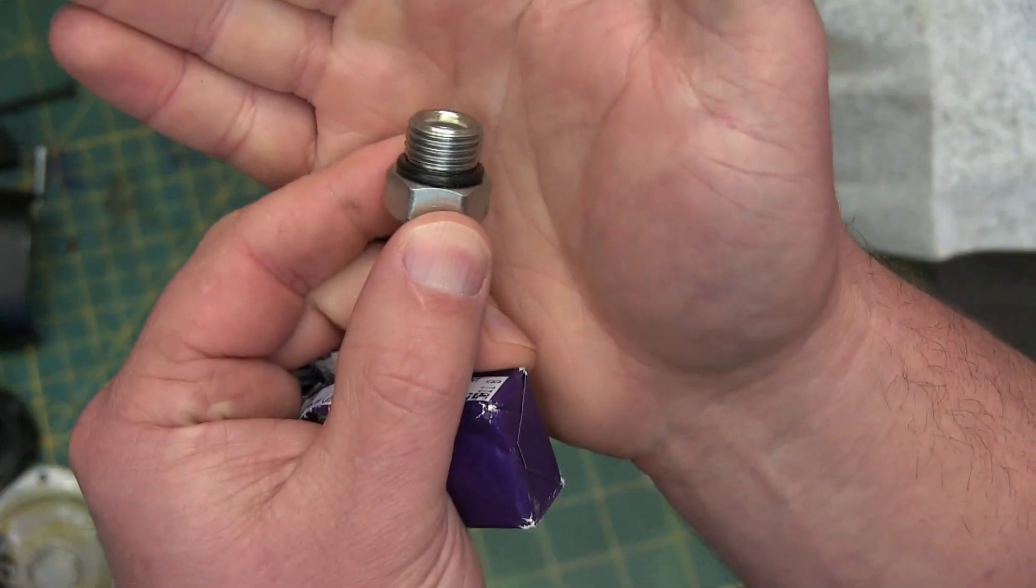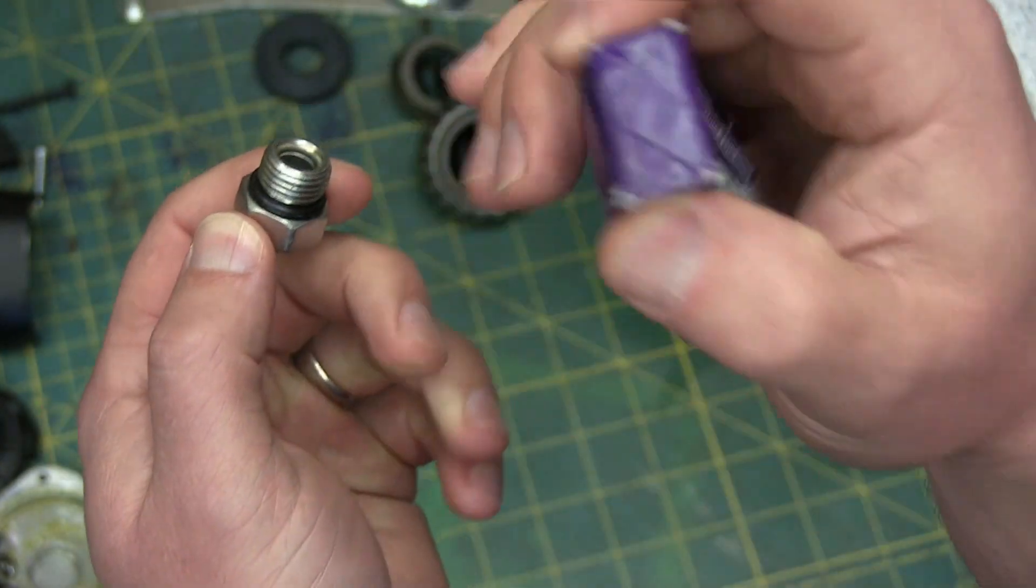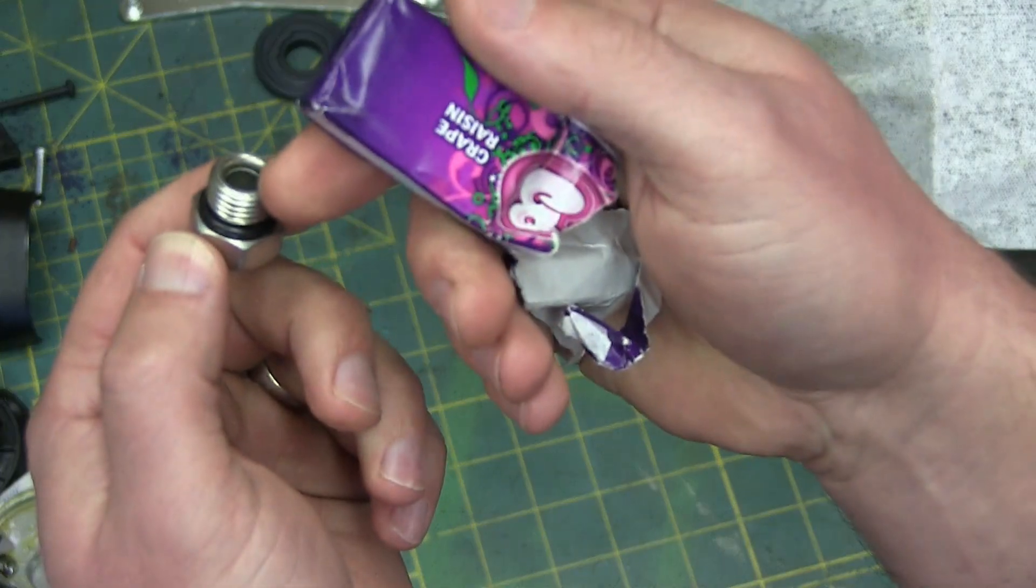Today, I'm gonna learn you how to fix a leaking o-ring, high pressure, hydraulic o-ring, with bubble gum.